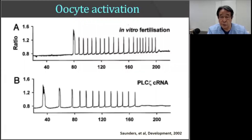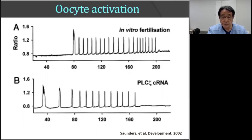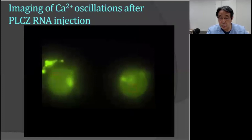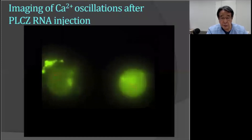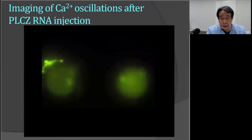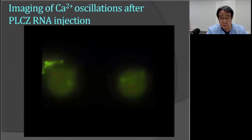This slide shows two types of oocyte activation: A is after IVF and B is after PLC-zeta (PSZ) injection. Both show very similar calcium oscillation patterns. This video shows calcium oscillation after PSZ injection — you can see periodic calcium spikes regularly. It is beautiful.